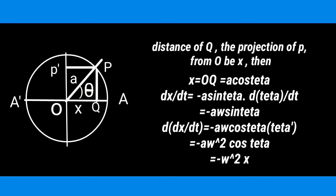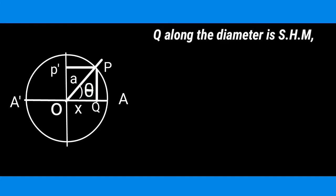Taking the first derivative: dx/dt equals minus A sin theta times dθ/dt, which gives minus A sin theta times omega. Taking the second derivative: d²x/dt² equals minus A omega cos theta times dθ/dt, which gives minus A omega squared cos theta. Since X equals A cos theta, substituting gives d²x/dt² equals minus omega squared X.